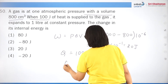Question 46: in a thermodynamic process, the gas releases 20 J of heat and 8 J of work is done on the gas. Using ΔU = Q − W = −20 − (−8) = −12 J, which is option 3.